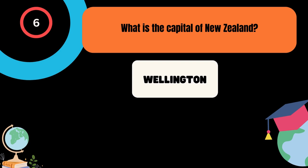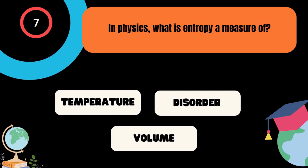In physics, what is entropy a measure of? A. Temperature, B. Disorder, C. Volume. And the correct answer is Disorder.